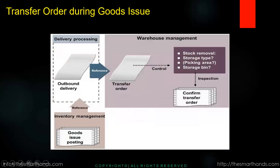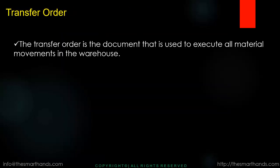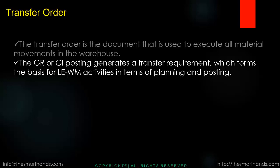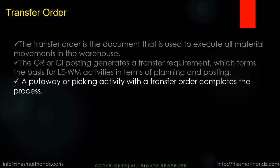The same thing happens for goods issue — when you start the goods issue process, a transfer order is created again. As you can see in this screen, a transfer order is created which can then be confirmed. In theory, the transfer order is the document used to execute all material movements in the warehouse. The goods receipt and goods issue postings generate a transfer requirement, which forms the basis for warehouse management activities in terms of planning and posting — and a put-away or picking activity with a transfer order completes the process.